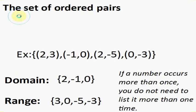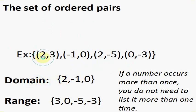Let me do an example. We have a set of ordered pairs: (2, 3), (-1, 0), (2, -5), and (0, 3). The domain would be all the x's: 2, -1, 2, and 0. The range would be the y's: 3, 0, -5, and -3. Notice the domain has 3 terms and the range has 4 terms, because if you have two x's that are the same, there is no need to write 2 twice.